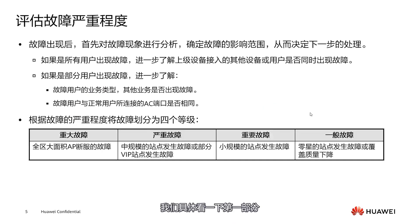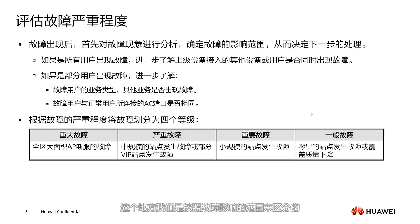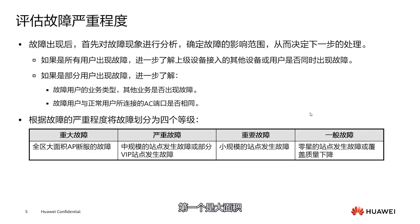Let's take a closer look at the severity levels of faults in the first part. We generally have a grading system. If you are familiar with Huawei products, you might know that we usually divide faults into four levels, categorized based on the range of the fault's impact: extensive, medium scale, small scale, or isolated instances.